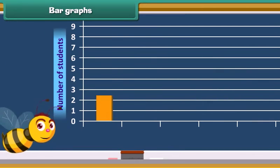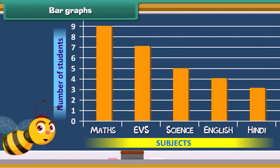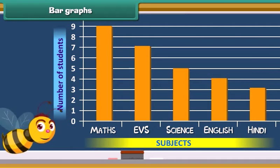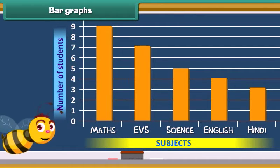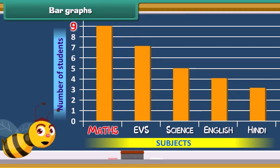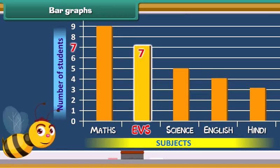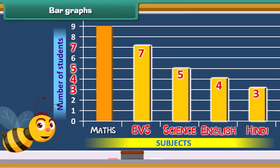The given chart is known as a bar graph. These graphs are another way of data representation. A bar graph uses bars to represent data. In the given graph, subjects are listed at the bottom and the number of students is given at the side. Nine blocks tell us about the number of students who like maths. Similarly, there are seven blocks in EVS, five blocks in science, four blocks in English, and three blocks in Hindi.